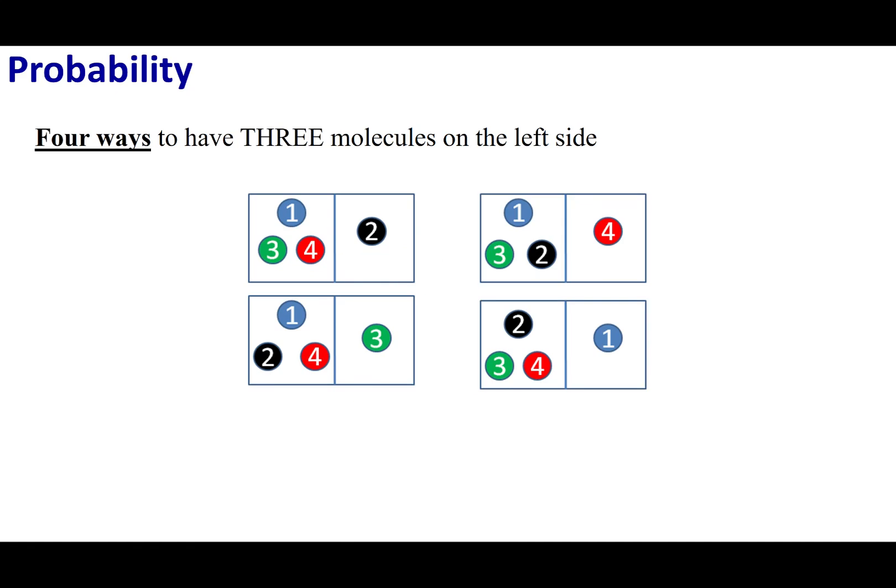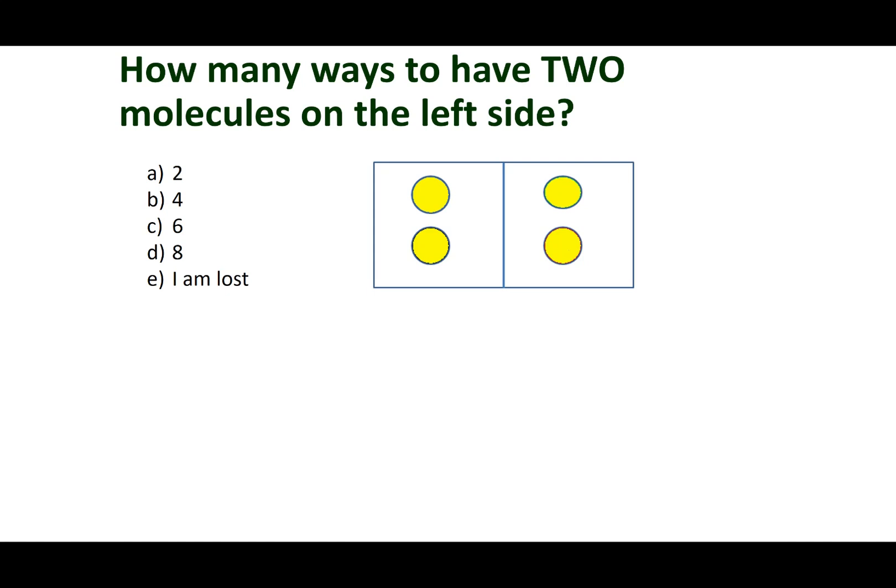Let's go ahead and think of other microstates. Another microstate I can think about is let's say that I have three molecules on the left side and I only want one on the right. Well, you guys can think about it. There's four different ways that I can do this. I can put one on the right, two on the right, three on the right, and then four on the right, and all the other ones go on the left hand side. So, there are four microstates depicted here. So, why don't you guys go ahead and take this quiz question.